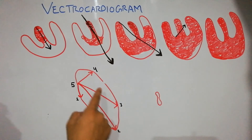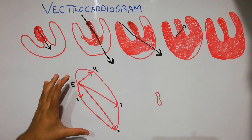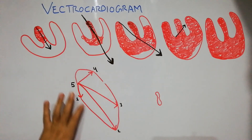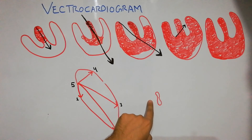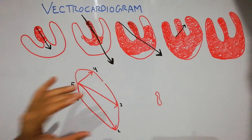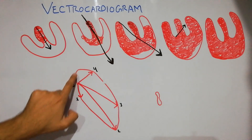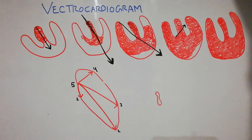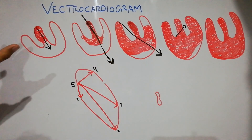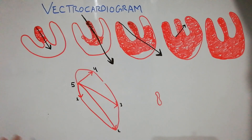All these vectors, when plotted together, form an elliptical shape known as the vectorcardiogram. It can be plotted for both depolarization and repolarization. The vectorcardiogram for depolarization is larger in size, while the one for repolarization is small. This vectorcardiogram can be seen on the screen of an oscilloscope when electrodes from the neck, abdomen, and chest are connected to the specific machine. The vectorcardiogram shows the voltage and direction of the cardiac vector at different stages of depolarization and repolarization.